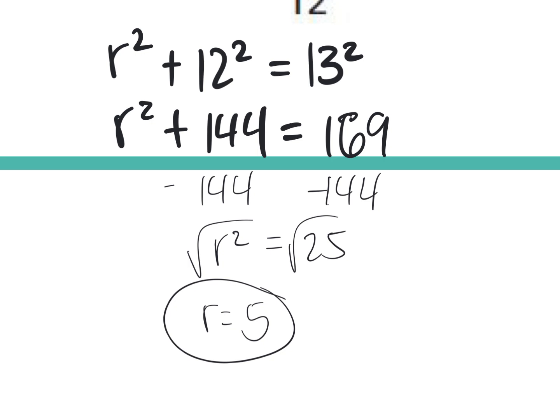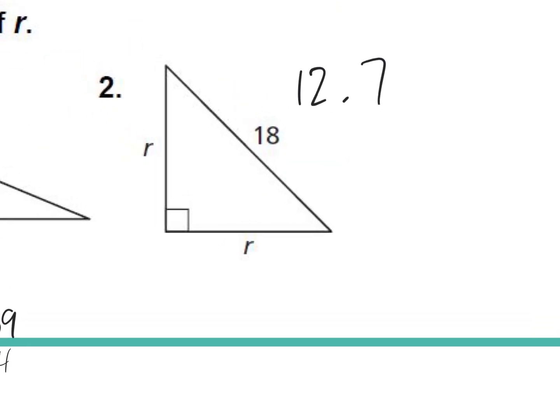We're Gucci? All right. The second one. Hannah? Why is it a 45-45-90? Because it's an isosceles, and the one angle is 90, and then it's a base angle theorem.